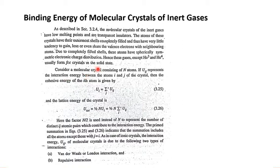When inert gases are in solid state form, they form face-centred cubic crystals. However, helium-3 and helium-4 are exceptions. So if we have inert gases in solid form, we can see them as face-centred cubic crystals.